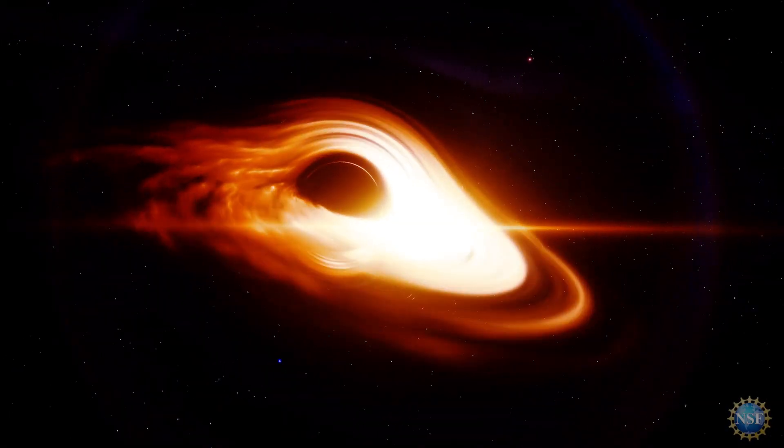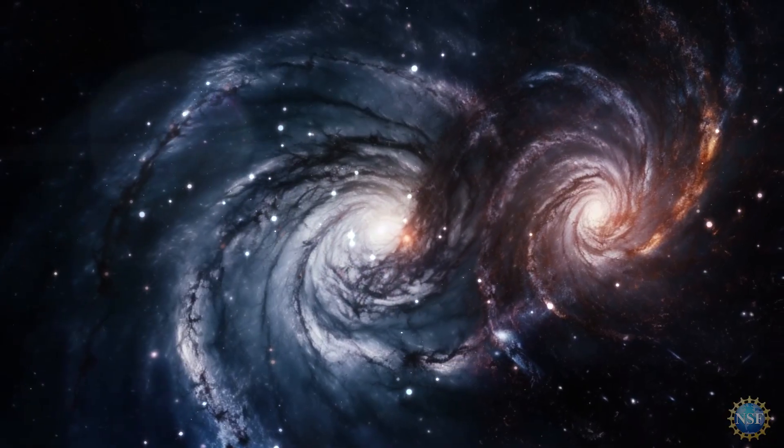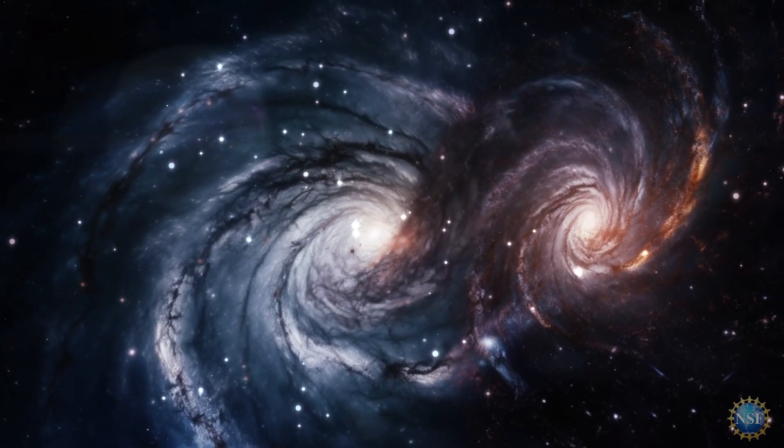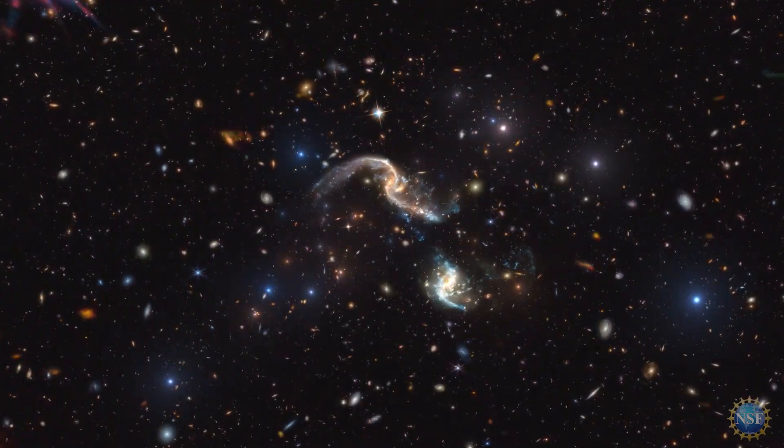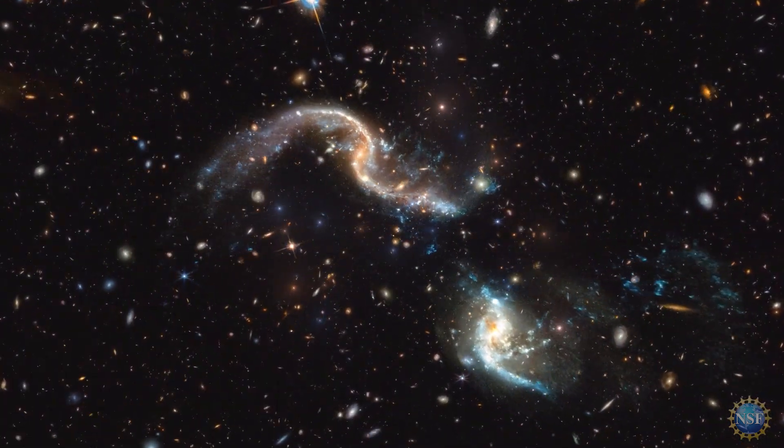Supermassive black holes lurk in the hearts of most galaxies, and galaxies grow by merging with other galaxies. When that happens, their black holes also merge and grow, becoming more and more massive over time.